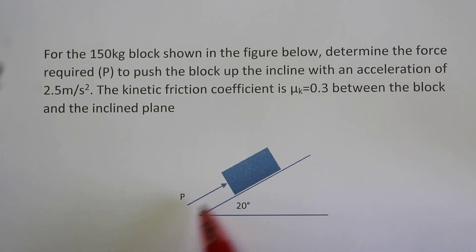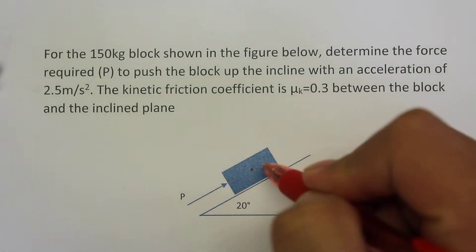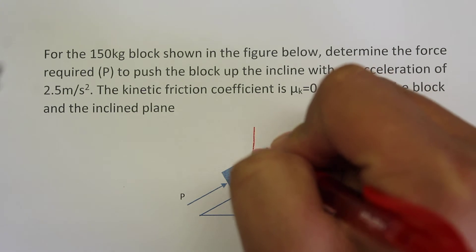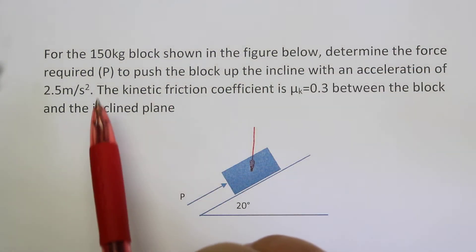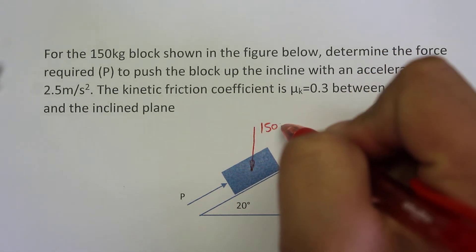Our first force is given to us, that's the direction of the force P and it's parallel to this surface. We have a weight force which will act directly downwards. The value of this will be 150 kilograms multiplied by 9.81.